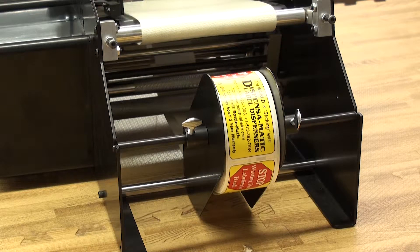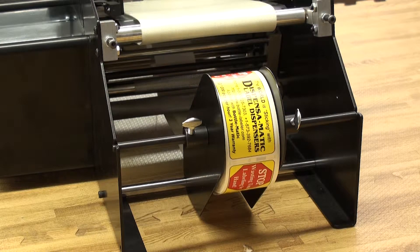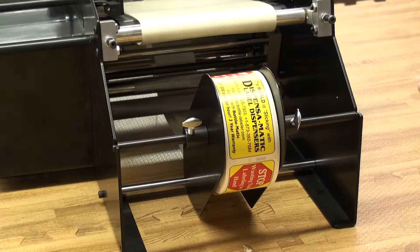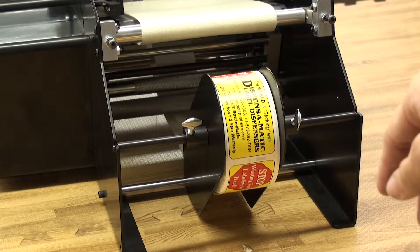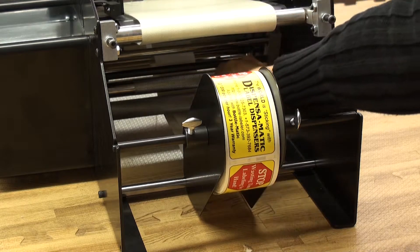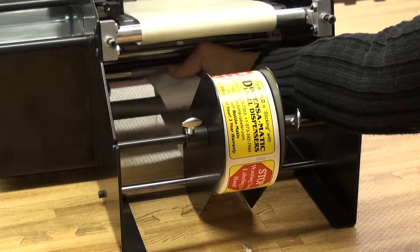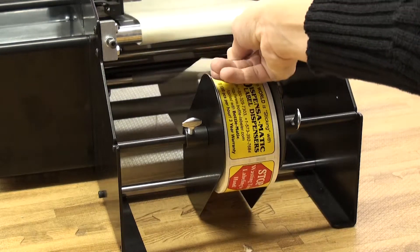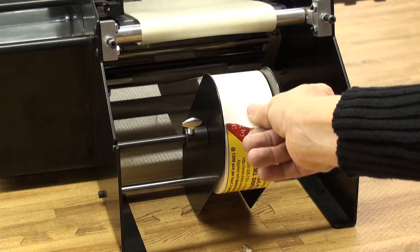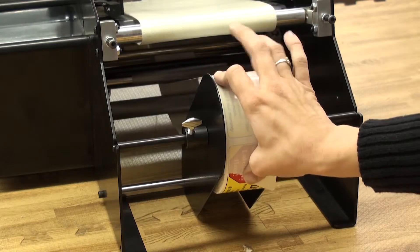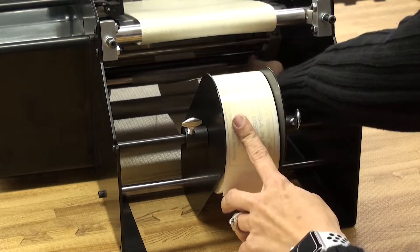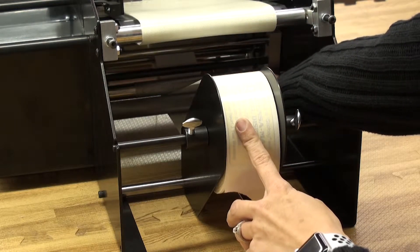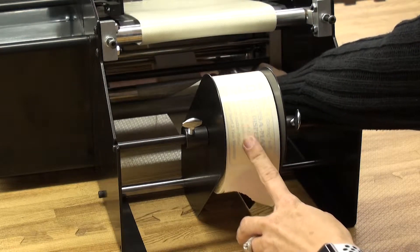You are going to go in between the feed roller assembly and the label drive roller. If you notice, both rollers are knurled. Lift up here and pull the backing paper towards the back of the machine and over the roll of labels. Make sure they are straight and then grasp the feed roller assembly and push back until it snaps into place.